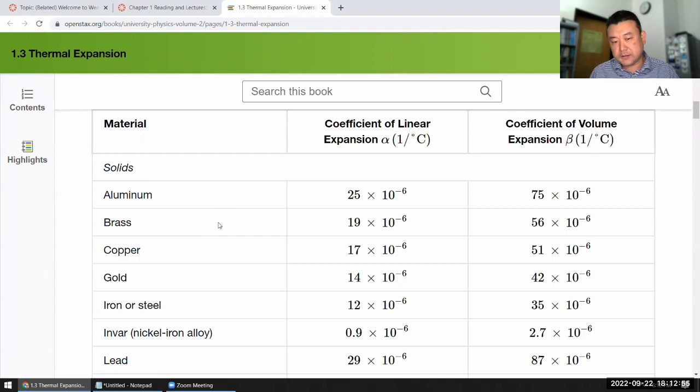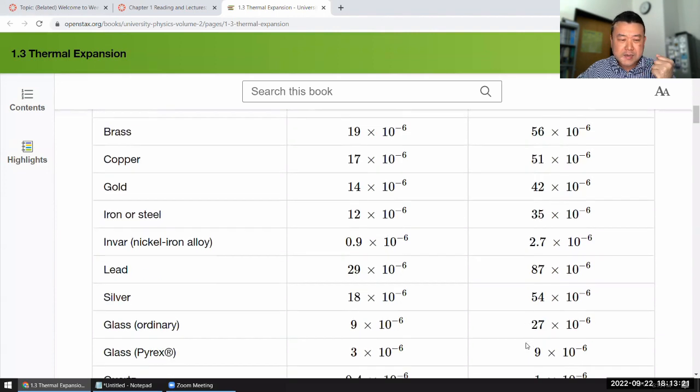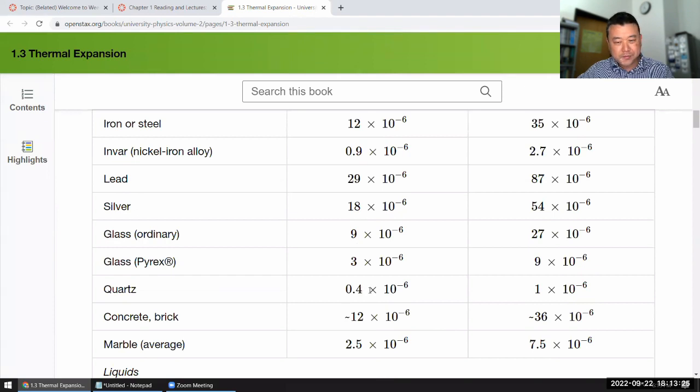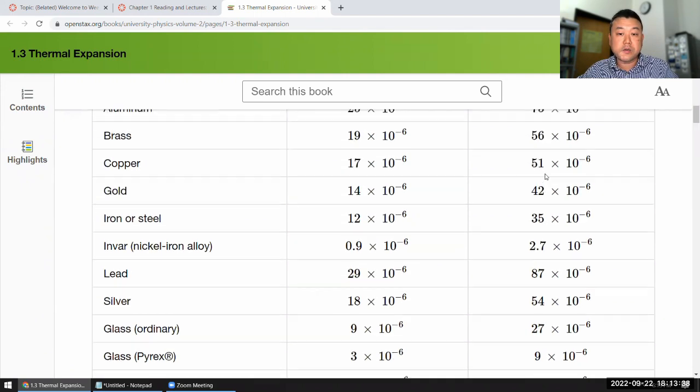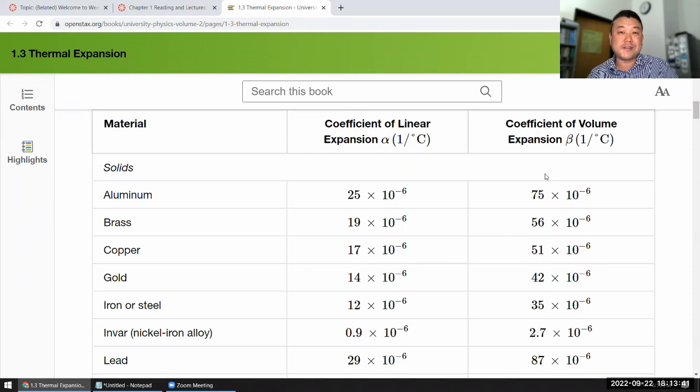There's one interesting thing I can say, which is when you look at this table of expansion coefficients, you will see that there's a relationship between the values along this column and the values along this column. Most of the cases, if you take the values along this column and multiply it by three, you will get these values. There are some weird odd exceptions. I think I saw one for quartz. Multiply this by three, and that's 1.2, which is not one. But most other cases, take this, multiply by three, you get that. There's a reason for that. It's not an accident. There's a calculus reason for that.